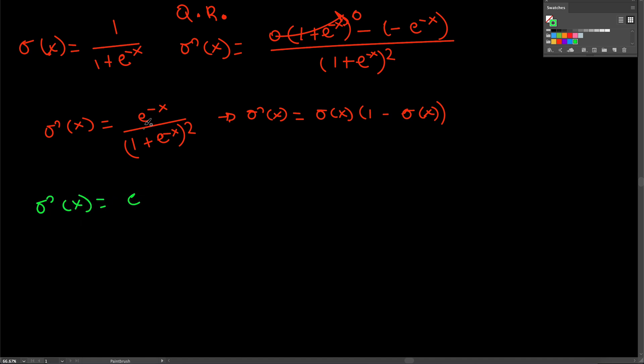So e to the minus x over 1 plus e to the minus x quantity squared. So this right here, this numerator, is almost the same thing as the denominator, of course except that we have a 1 added here.